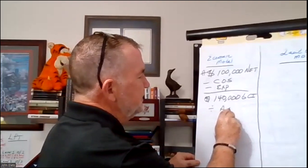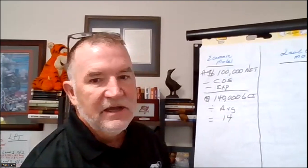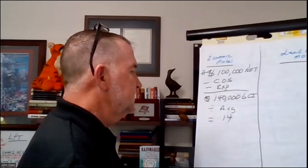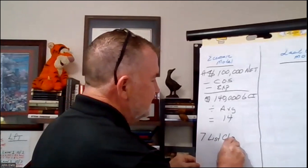The next step is we're going to take the gross commission income and divide that by our average commission, and that's going to tell us how many sales we need to close. If our average commission is $10,000, then we need to close 14 sales. We're going to multiply that number by the percentage of business on the listing side and the buyer side. If I have a 50-50 model, seven sales come from listings and seven from buyers — so seven listings closed and seven buyers closed.